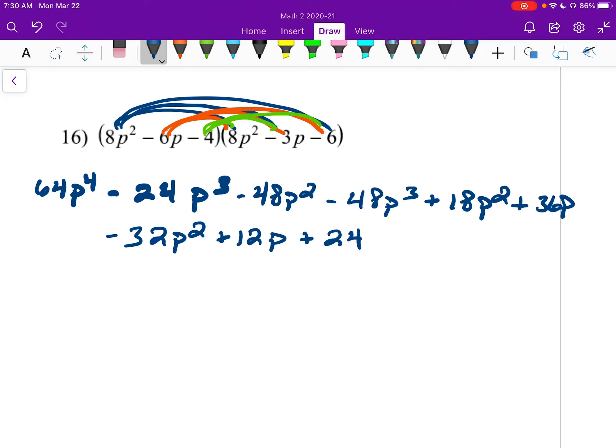Alright, now highest exponent first. Our highest exponent is a 4. So this will be 64p to the 4th. And then for the cubed, I have negative 24 and negative 48. That gives me negative 72p cubed, right? I did this one and that one together.